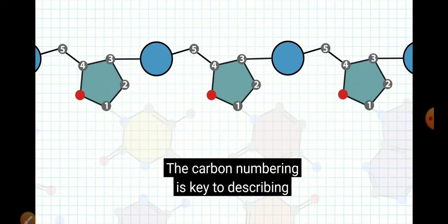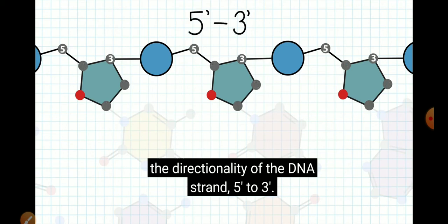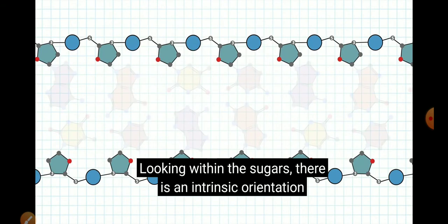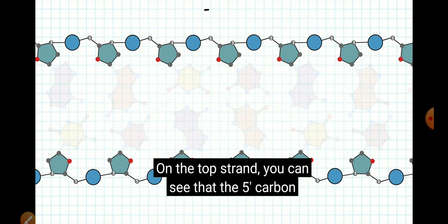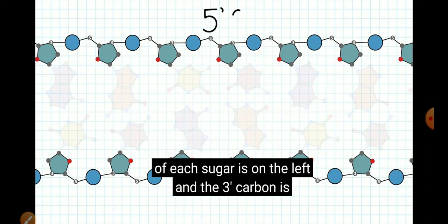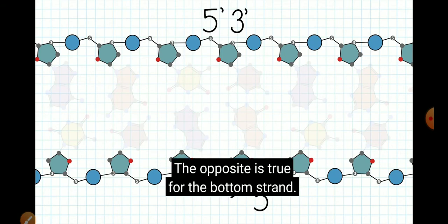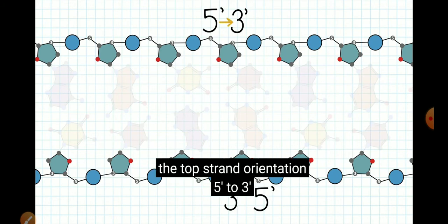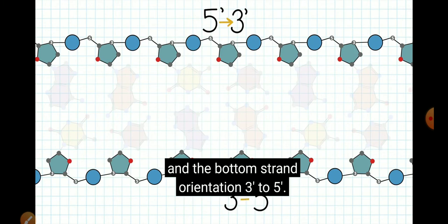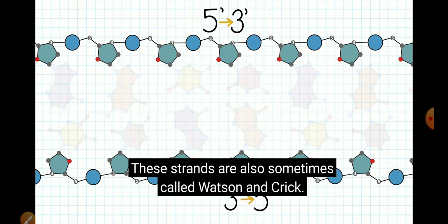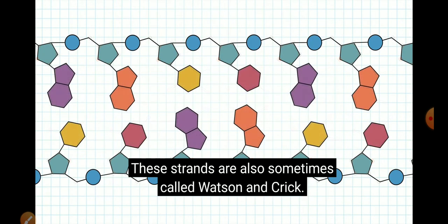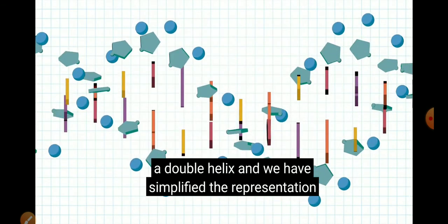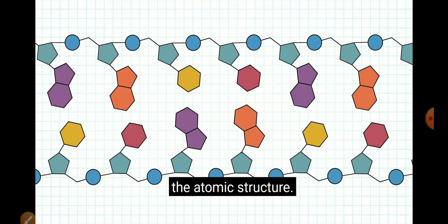The carbon numbering is key to describing the directionality of the DNA strand, five prime to three prime. Looking within the sugars, there is an intrinsic orientation difference between the two strands. On the top strand, you can see that the five prime carbon of each sugar is on the left, and the three prime carbon is on the right. The opposite is true for the bottom strand. Reading left to right, that makes the top strand orientation five prime to three prime, and the bottom strand orientation three prime to five prime. These strands are also sometimes called Watson and Crick. Keep in mind that this double-stranded DNA is still a double helix, and we have simplified the representation by flattening and unwinding the helix here to better see the atomic structure.